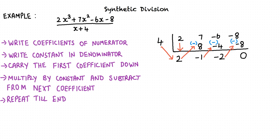We have reached the last coefficient and thus the synthetic division is complete. The final step is to determine the quotient and remainder of the synthetic division we have performed. How do we do that? The last number, in this case 0, is the remainder we obtain when dividing 2x³ plus 7x² minus 6x minus 8 by x plus 4.